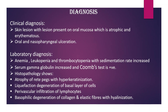Diagnosis. Clinical diagnosis: skin lesion with lesions present on oral mucosa that are atrophic and erythematous will suggest lupus erythematosus. Oral and nasopharyngeal ulceration is a major diagnostic criterion for systemic lupus erythematosus. Laboratory diagnosis: anemia, leukopenia, and thrombocytopenia with increased sedimentation rate. Serum gamma globulin is increased and Coombs test is positive. Histopathology shows atrophy of rete pegs with hyperkeratinization and liquefaction degeneration of the basal layer of cells, perivascular infiltration of lymphocytes, and basophilic degeneration of collagen and elastic fibers with hyalinization.